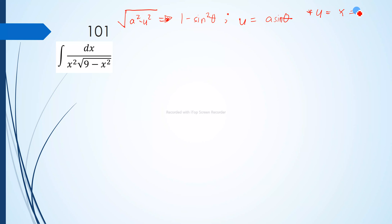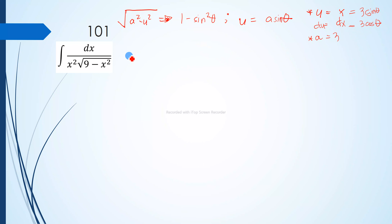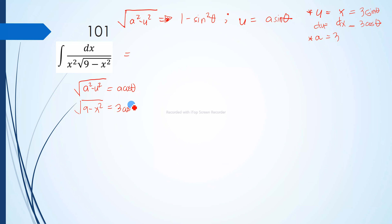Since u equals a sine theta and our u is x, we have x equals 3 sine theta, and dx becomes 3 cosine theta d theta. Also, from our previous discussion, when the radical is in the form a squared minus u squared, the square root of 9 minus x squared can be written as 3 cosine theta.